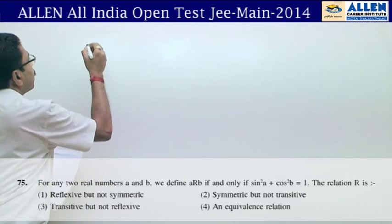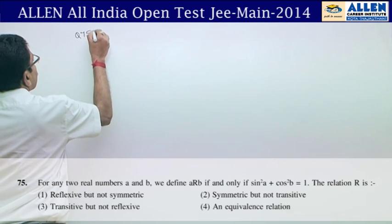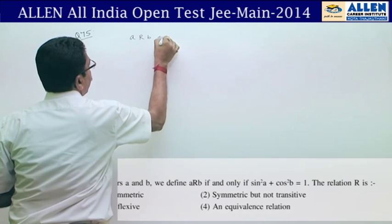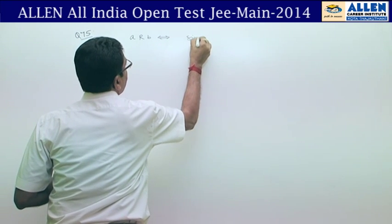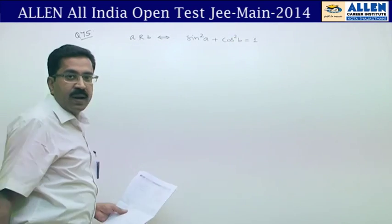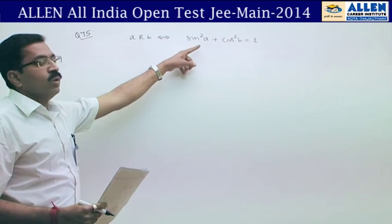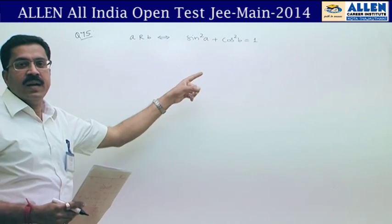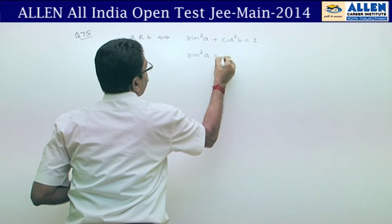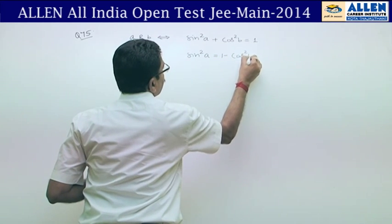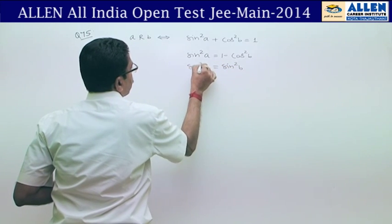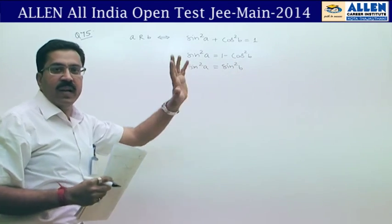Question No. 75 is related to a relation: a is related to b if and only if sin²a + cos²b = 1. We need to check what type of relation this is — reflexive, symmetric, or transitive. This relation simplifies: sin²a = 1 − cos²b = sin²b, so we get sin²a = sin²b.